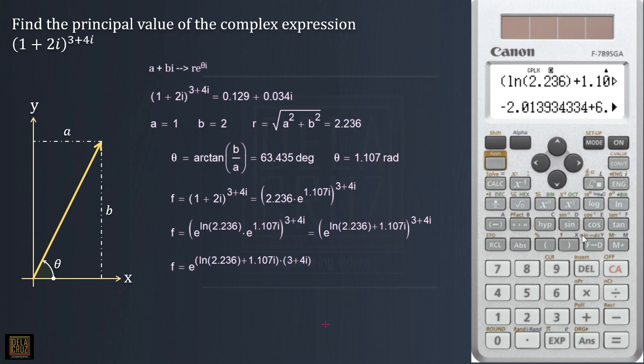It will give you this: negative 2.0139 plus - let me have here, simplified: e raised to negative 2.0139 plus 6.5397i.